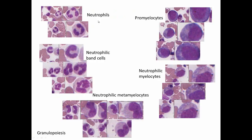Looking at the entire scheme: mature neutrophils, band cells with a horseshoe shape that can appear in blood during infection when many neutrophils are needed, the neutrophilic metamyelocyte with a kidney shape and mature cytoplasm, the neutrophilic myelocyte with a combination of specific and nonspecific granules, and then the promyelocyte with azurophilic granules and blue cytoplasm from abundant ribosomes.